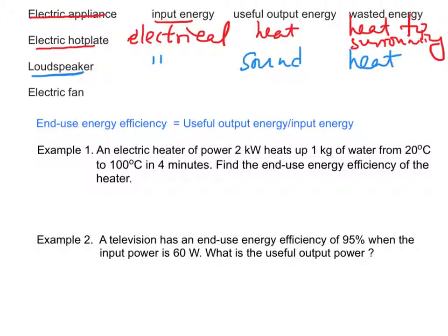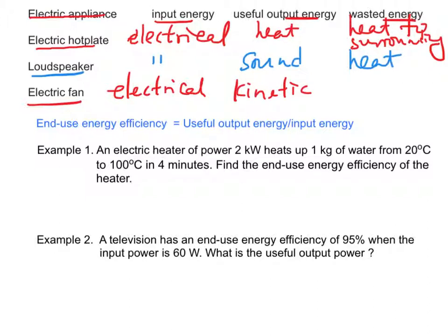For an electric fan, the input energy is again electrical. The useful output energy is kinetic energy, and the waste energy is heat and sound.